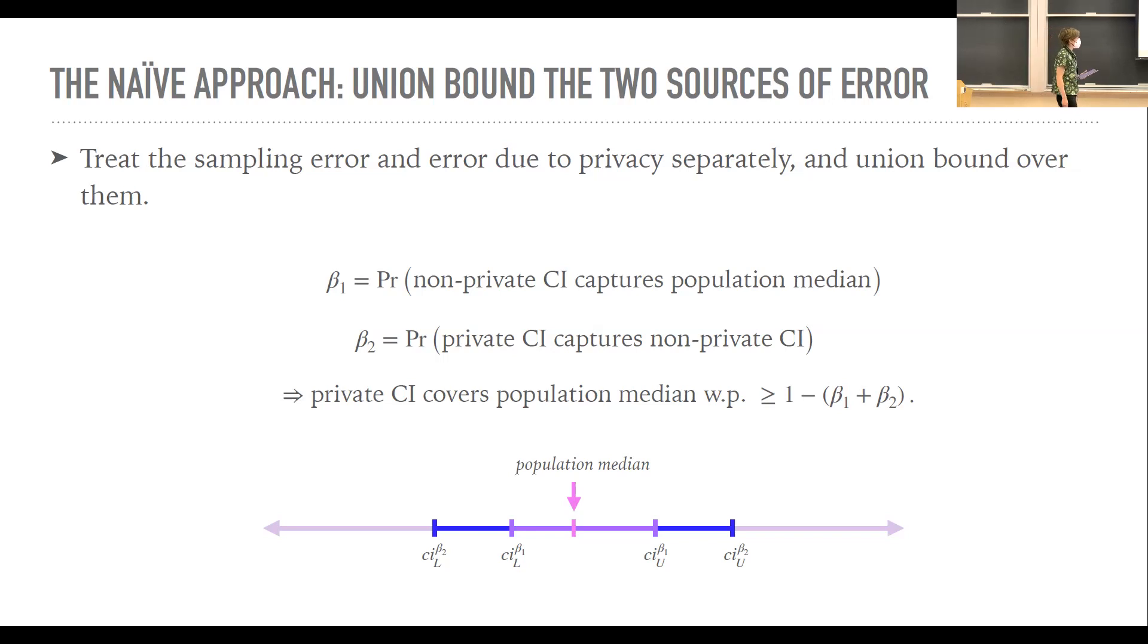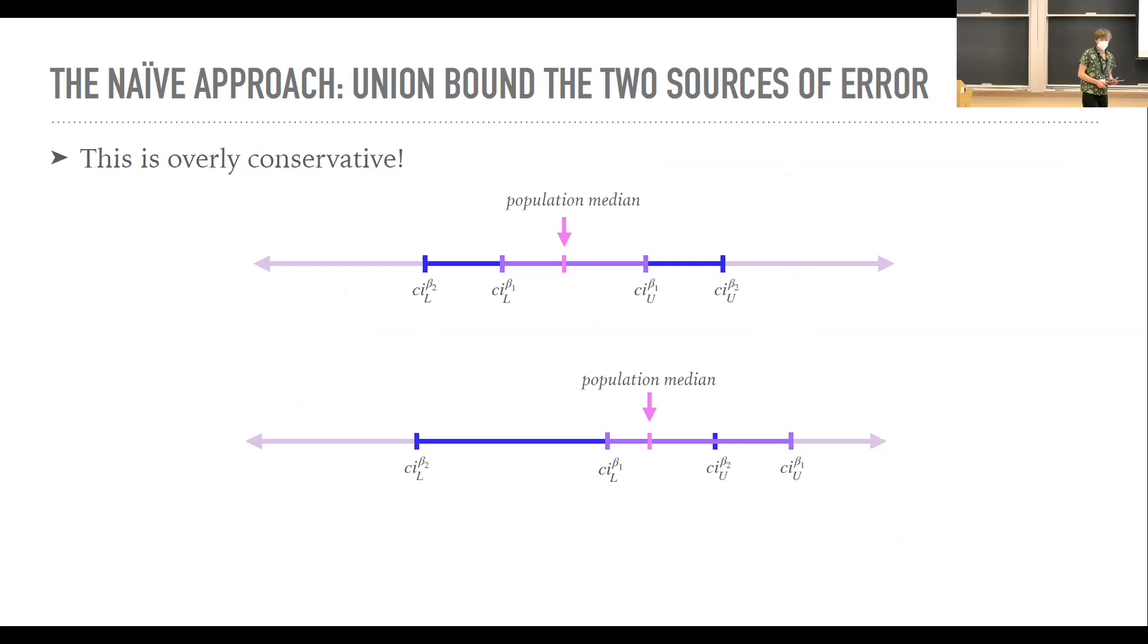And you could think, okay, you've got two different error probabilities. So you've got beta one, your probability that the non-private confidence interval captures the median. Then you could also say, I'm just going to throw beta two, which is I'm going to have some sort of private confidence interval. And I'm going to think about the probability that that confidence interval captures the non-private one. And then I'm just going to union bound them together and get my new confidence interval and have some sort of validated guarantee. And this is fine, it's valid, but it's going to be really overly conservative.